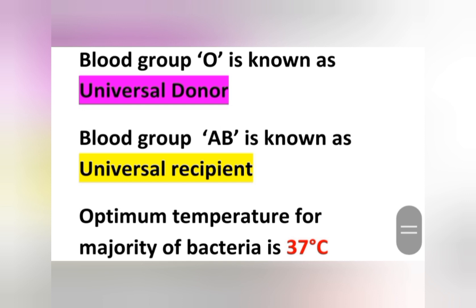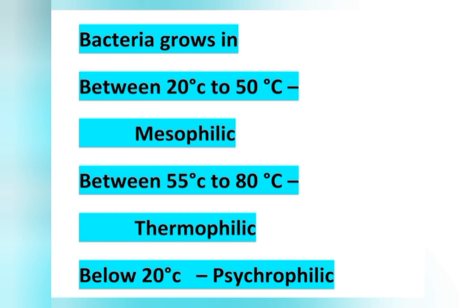The optimum temperature for the majority of bacteria is 37 degrees Celsius. Bacteria growing between 20°C to 50°C are known as mesophilic bacteria. Bacteria growing between 55°C to 80°C are known as thermophilic bacteria.